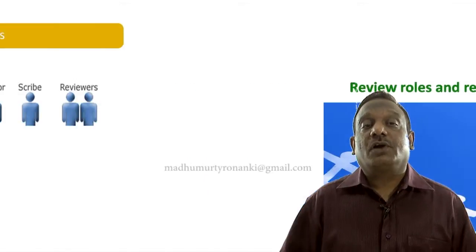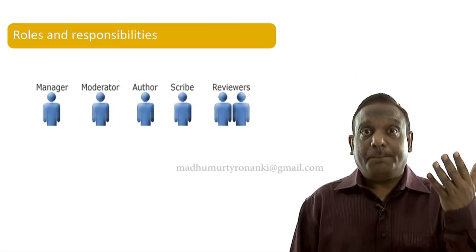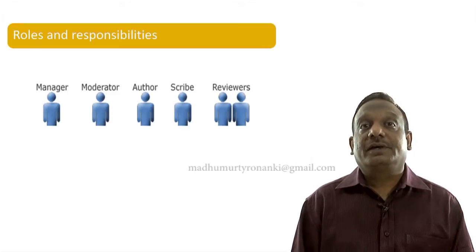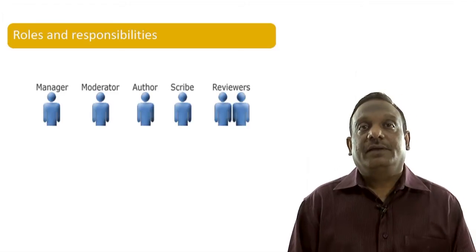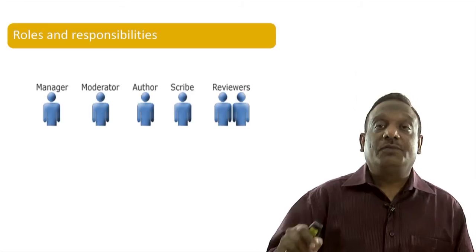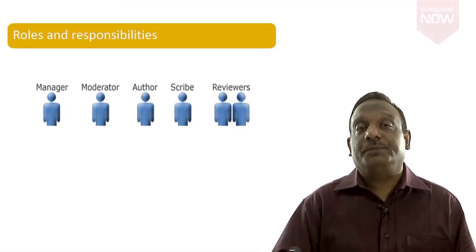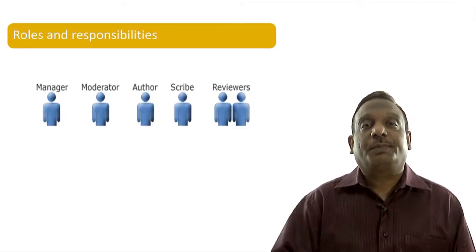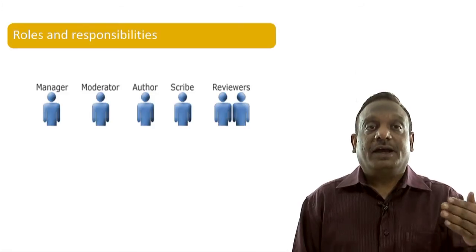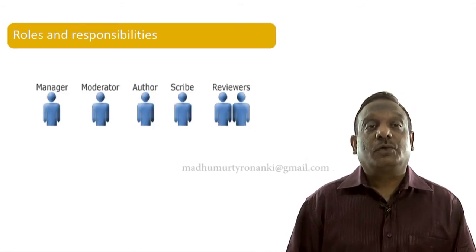In reviews we talk about five different roles. The first role is manager, the second is moderator, the third is author, the fourth is scribe, and the fifth is reviewers. If we are using an inspection process, sometimes reviewers are called inspectors, but these are the five roles. Let us understand the responsibilities of each.